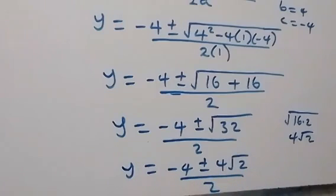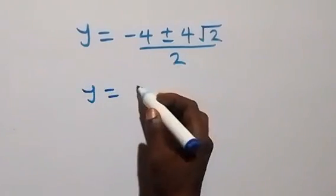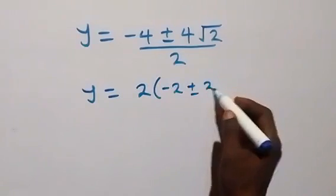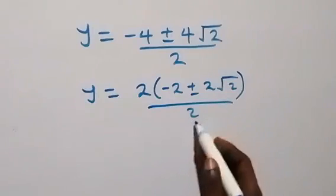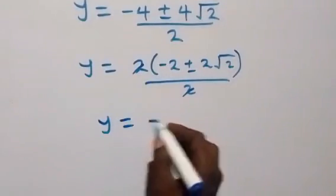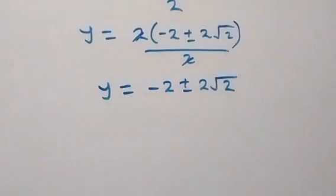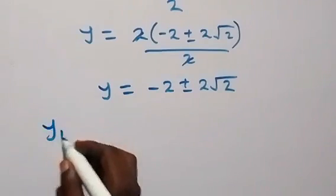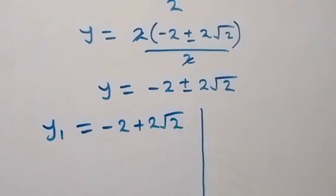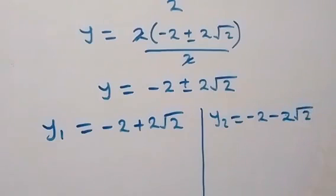Over 2. We separate this — there is a factor of 2 common, so this becomes 2 into bracket minus 2 plus or minus root 2, then over 2, and the 2 cancels out. We have y equals to minus 2 plus or minus 2 root 2. So here we have 2 values of y: y₁ equals to minus 2 plus 2 root 2, and y₂ equals to minus 2 minus 2 root 2.